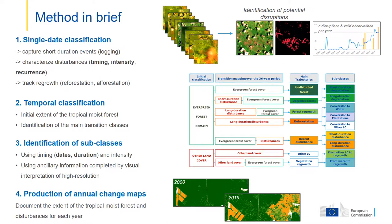Analyzing every single date image allows capturing short-duration events such as selective logging, but also characterizes precisely the disturbances in terms of timing, intensity — which is the number of total observations of disruption — and recurrence, which is the frequency of the disturbances. It also allows better tracking of regrowth, such as reforestation or afforestation.